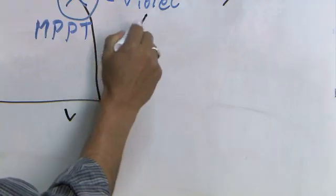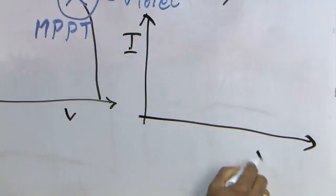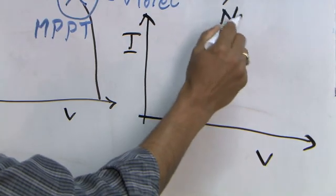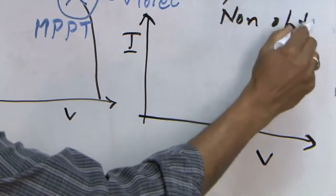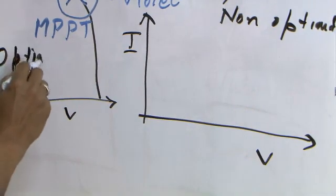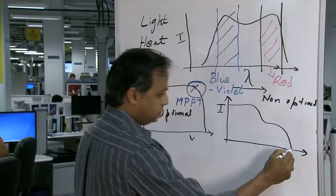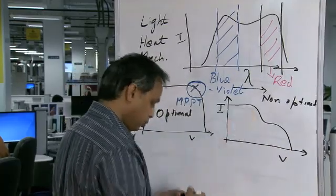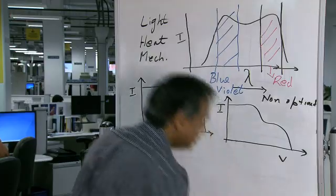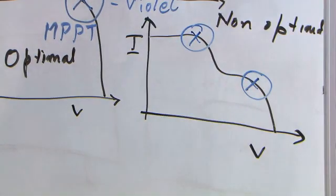In such a situation your IV curve would now be distorted. This is a non-optimal condition that I am drawing and this is an optimal case. One classic case would be due to shading where now you are looking at two different MPPT or two different maximum power points.